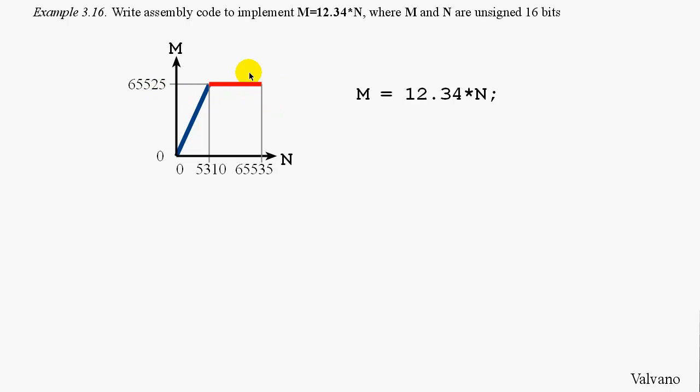The problem did not specify what to do if N is greater than 5310, in which case the result will not fit back in the 16-bit variable. We saw in the last example that we could represent non-integer values with a quotient of two integers. Such that if we were to multiply N by 1234 and then divide it by 100, we could perform this operation.